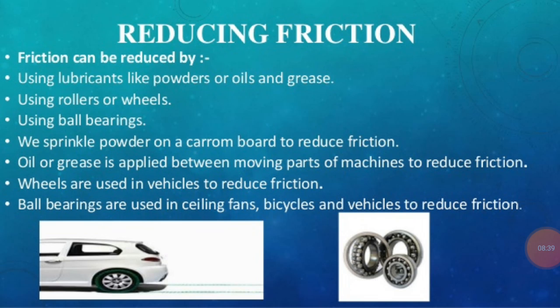So these are the certain ways used to reduce friction: we can sprinkle powder on a carom board to make the surface smooth, oil and grease are applied between the moving parts of machines, wheels are used in vehicles, and ball bearings are used in ceiling fans and bicycles. There is a diagram given showing the ball bearings.